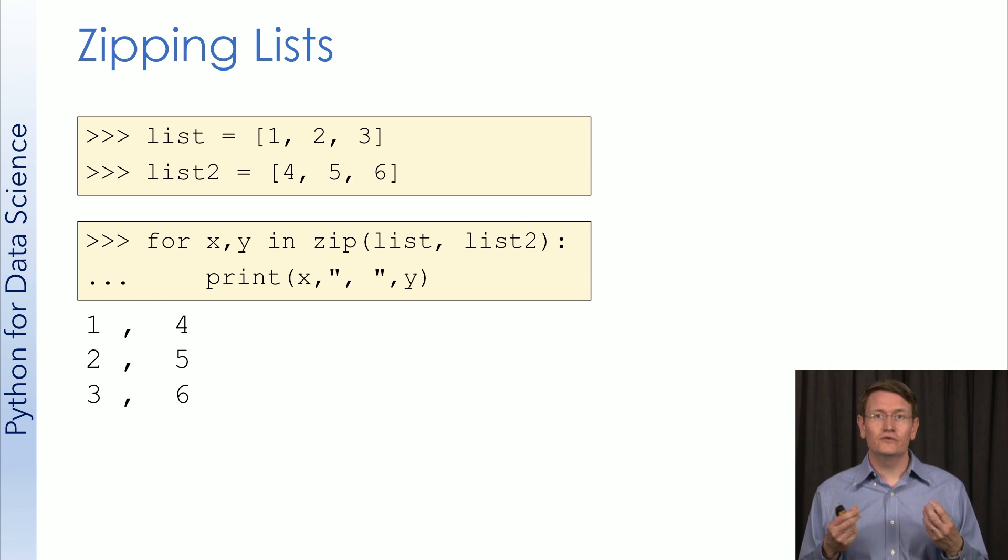When you ask for x, y in zip list list 2, you'll get back the following x, y pairs. We don't have to get into the details now, but just remember that if you want to work through multiple lists at the same time, zip can be pretty useful.